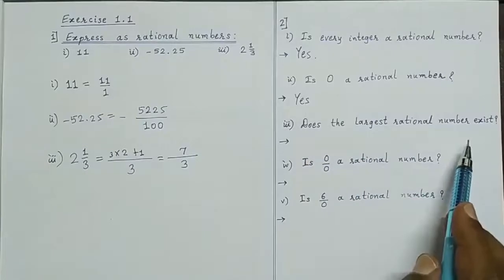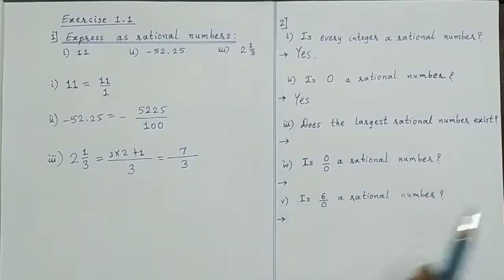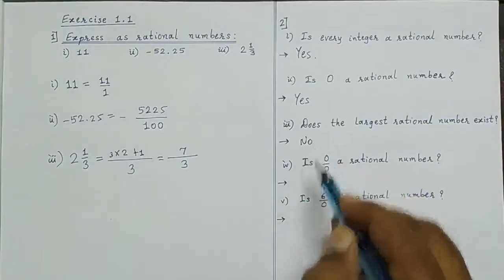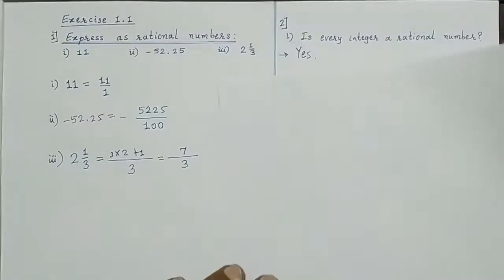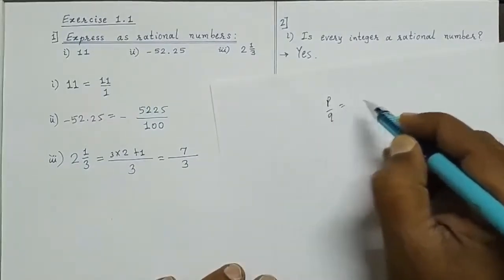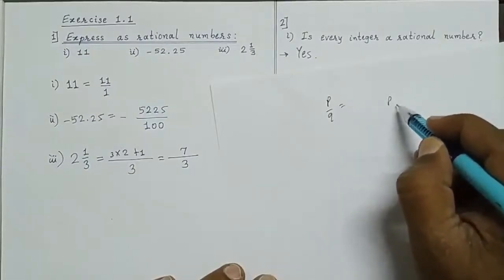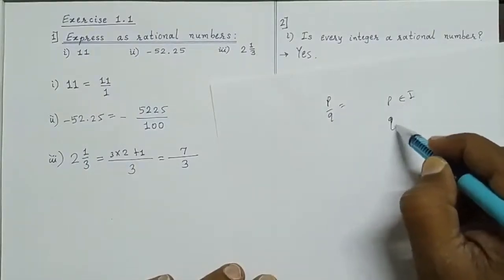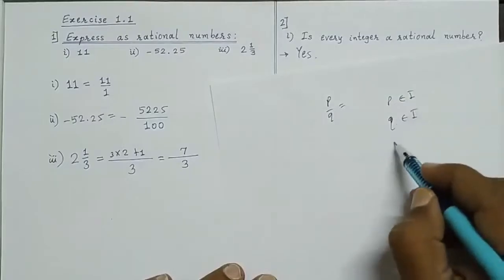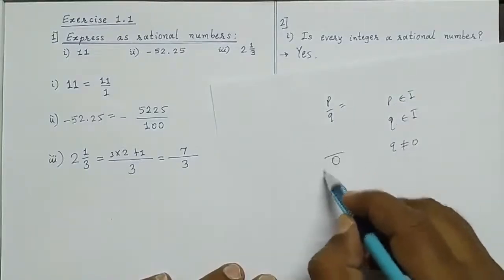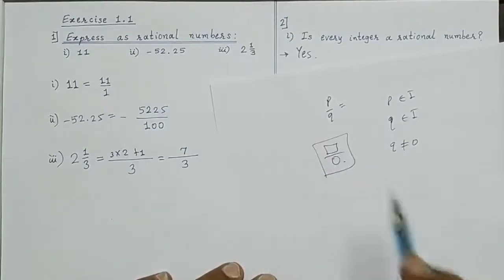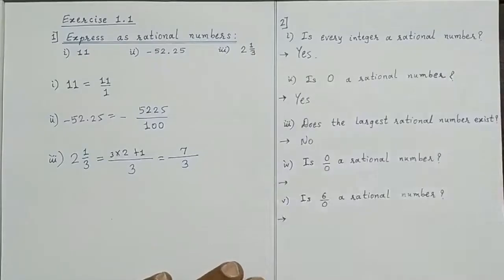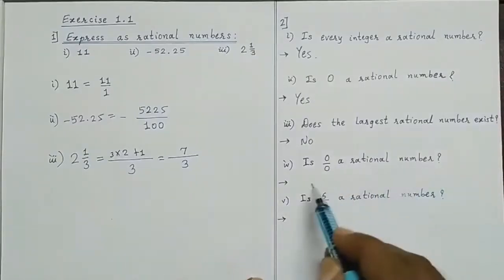Does the largest rational number exist? No, because rational numbers are infinite. Is 0 upon 0 a rational number? No. By the definition, a rational number is in the form P by Q where P and Q are both integers but Q must not equal to 0. Here the denominator is 0, so 0 upon 0 is not a rational number.